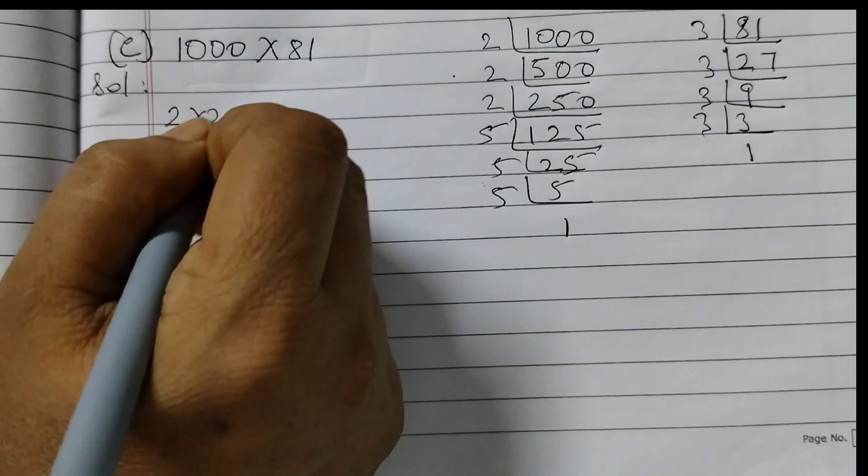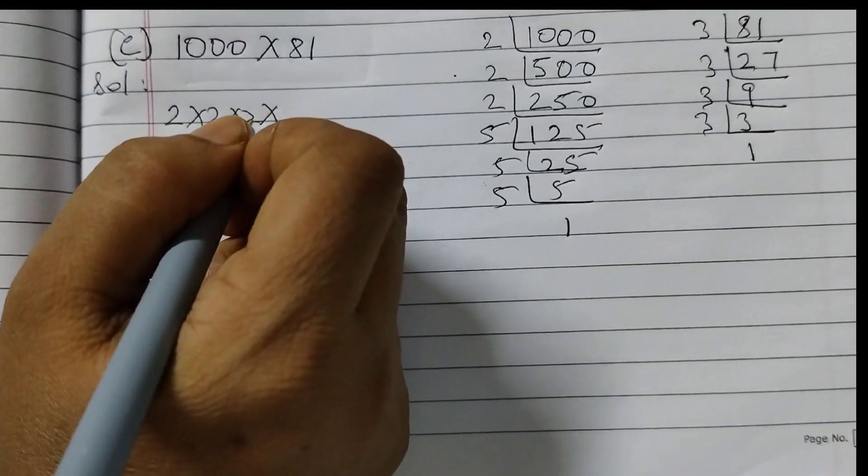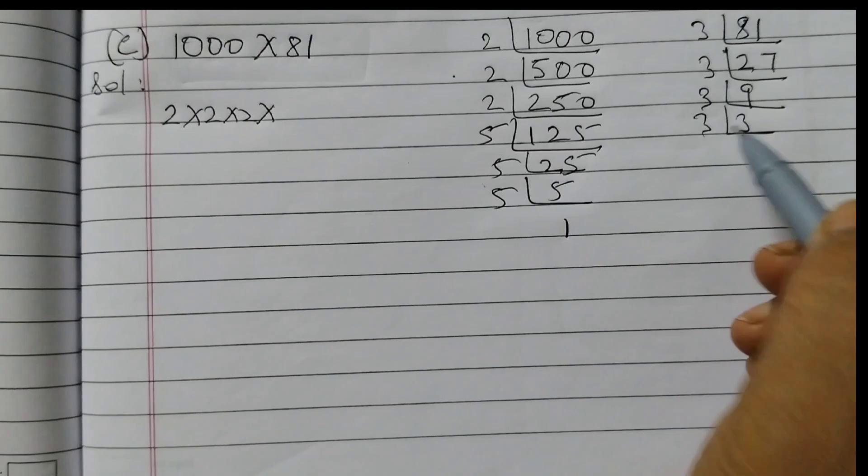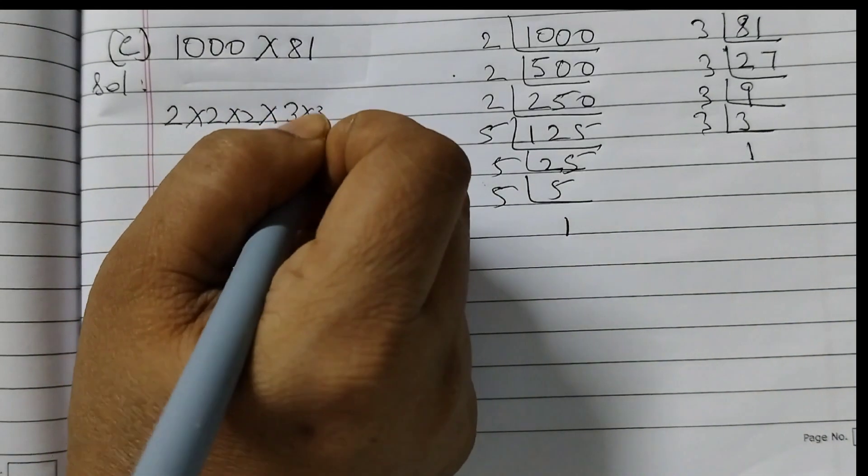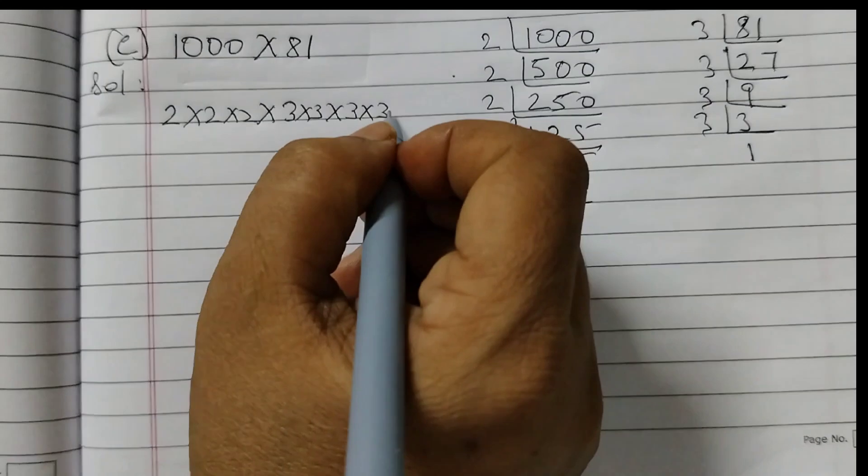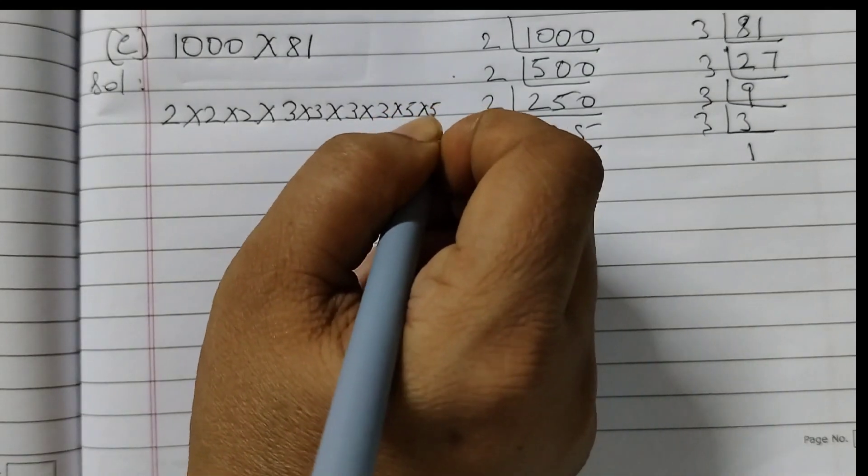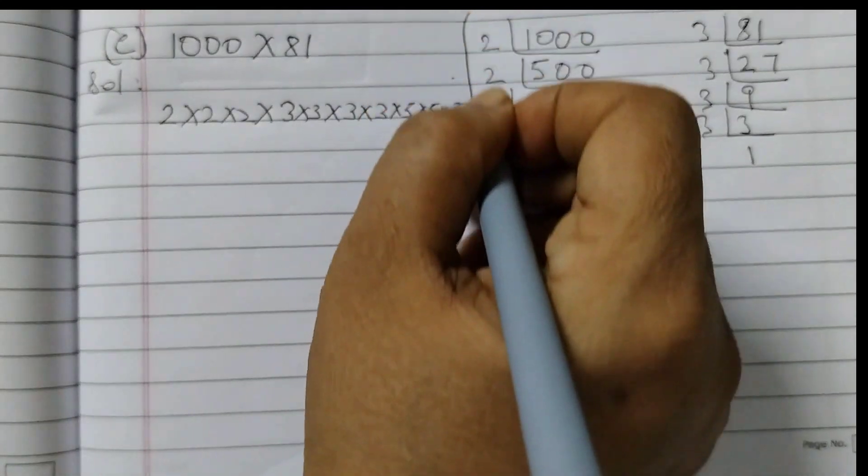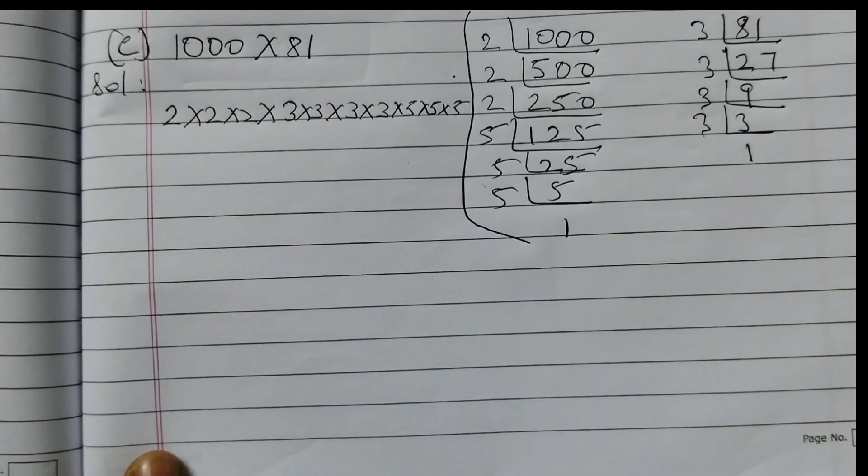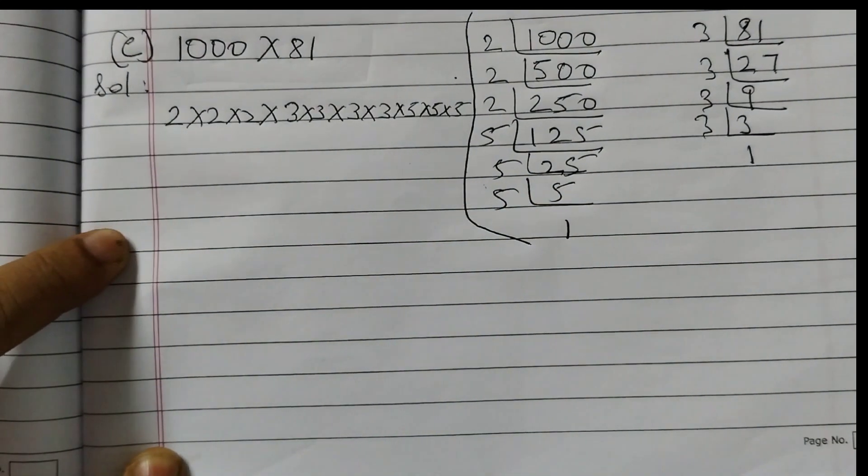1, 2, 3, so first 2 into 2 into 2, then we have 3, 1, 2, 3, 4, and then 1, 2, 3, so into 5 into 5 into 5. So this is how you need to write, and with this we complete question number 4.